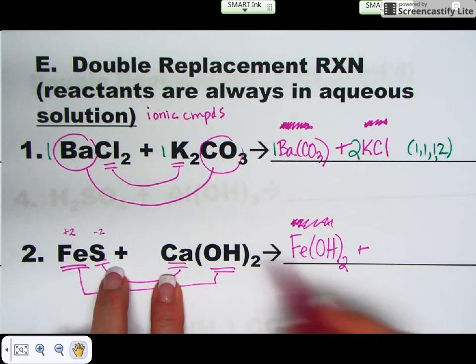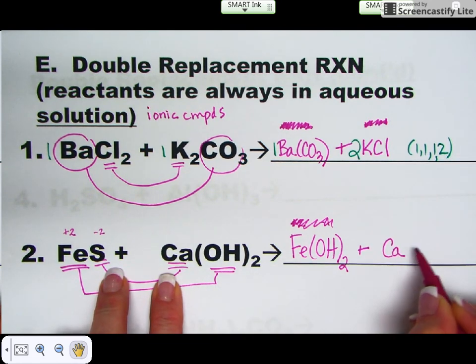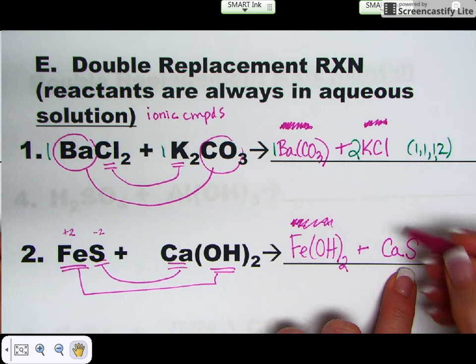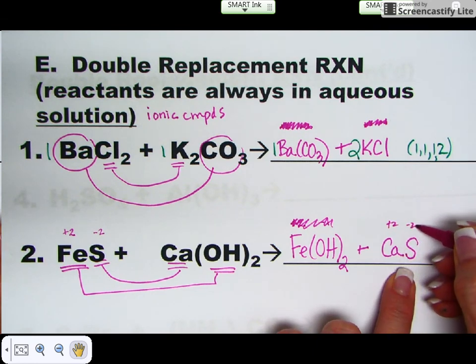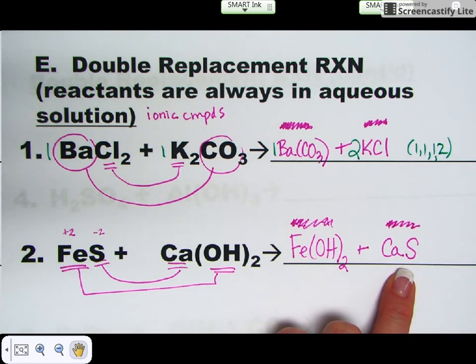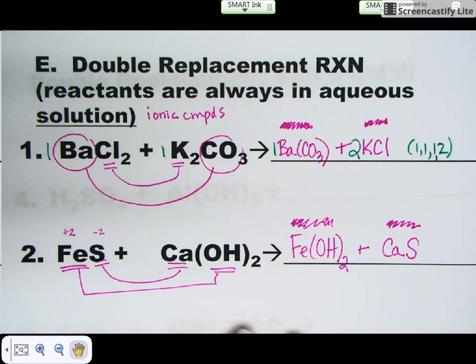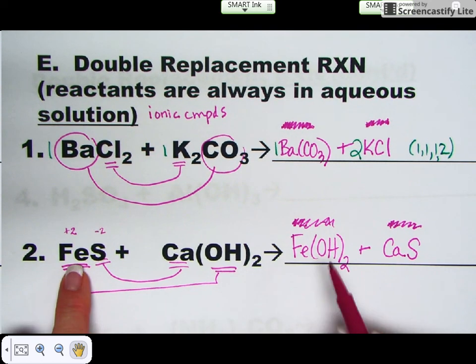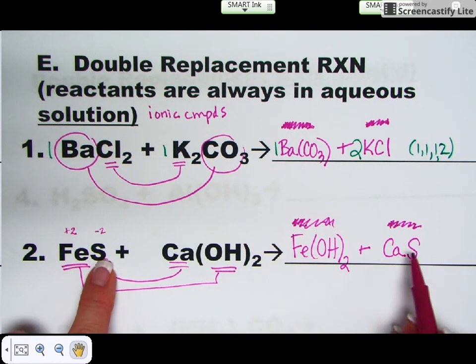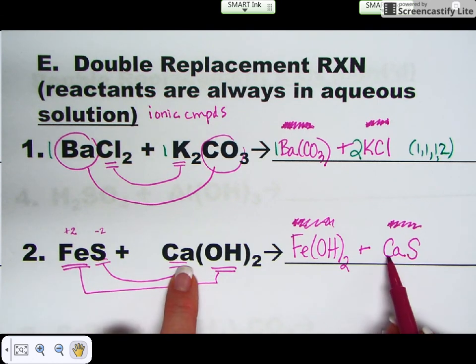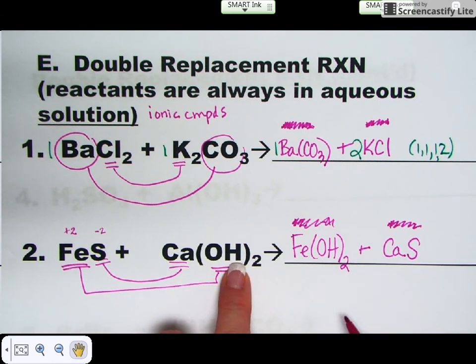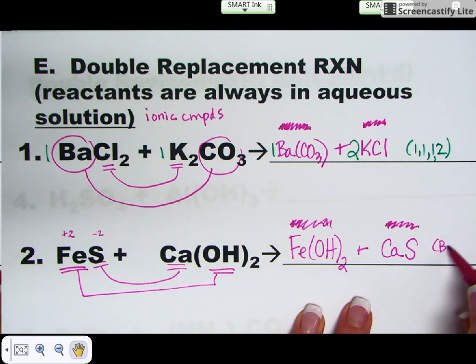Now calcium and sulfur come together. Put your metal first, Ca and S. He's a plus two. He's a minus two. Charges cancel. So that is the right formula for calcium sulfide. Now balance the equation. You have one iron, one iron, one sulfur, one sulfur, one calcium, one calcium, two hydroxides, and two hydroxides. So this one is already balanced.